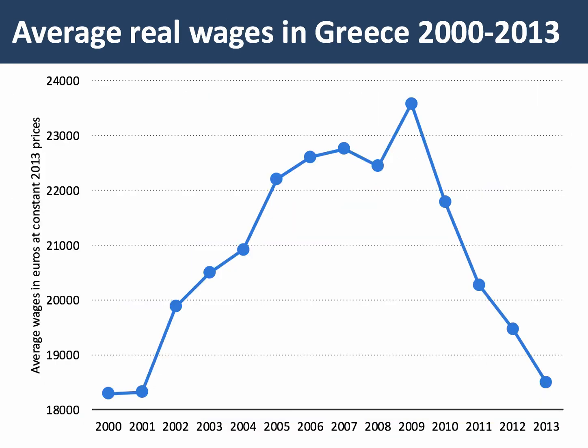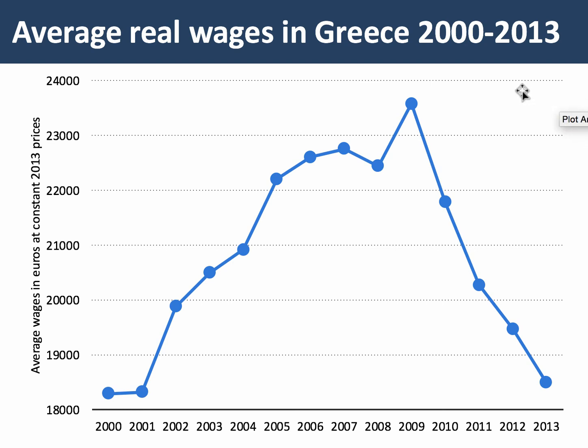So how has Greece achieved an internal devaluation? Greece has basically done it by, first of all, deep cuts in wages. This chart shows the average wage in Greece in euros, measured at constant 2013 prices — in other words, the real wage in Greece. In the boom years, wages went up from just over 18,000 euros per year to over 23,000, nudging 24,000. Then we get to 2009, and the wage in real terms in Greece has been falling very, very sharply — from 23,500 back to 18,500. In other words, it's back to where it was in 2001. So there has been a huge slump in real wages in Greece, and this is part of the causation of internal devaluation.